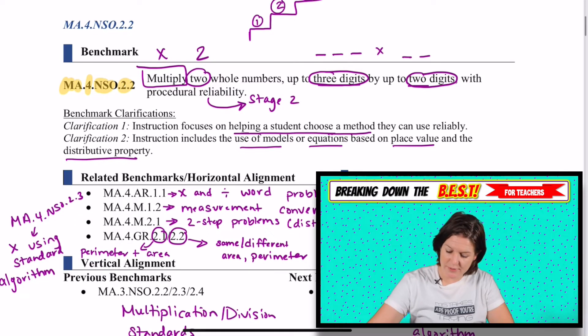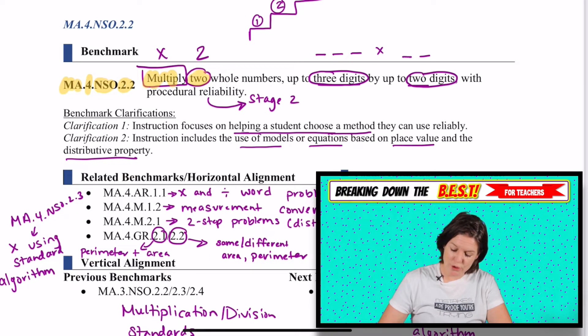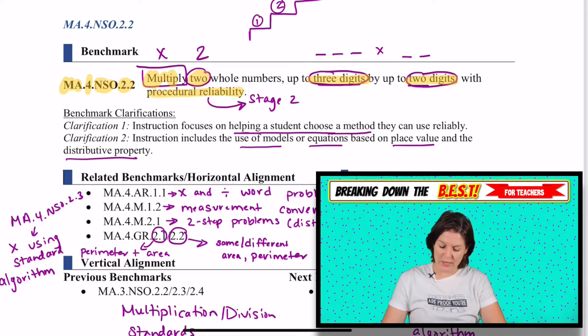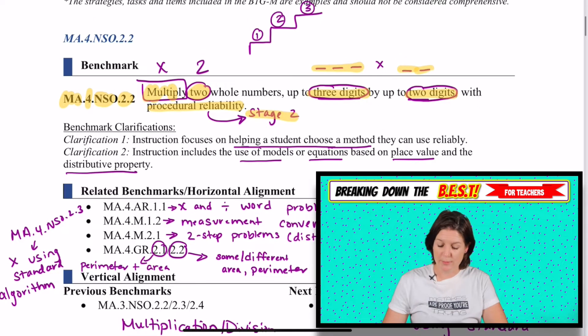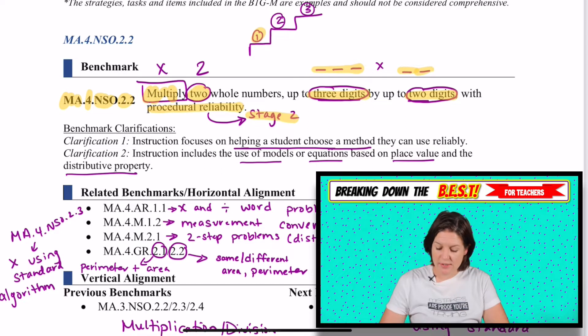Okay, so this standard says to multiply two whole numbers up to three digits by two digits with procedural reliability. Okay, so we're multiplying two whole numbers, right? No fractions, no decimals for this standard that are up to three digits. So the ones, tens, hundreds place, which means it could be one digit times two digits. It could be one digit times three digits. It could be three digits times two digits or two digits times three digits. Either way, it's using procedural reliability, which I label as stage two or step two. This is not an exploration standard. We're moving into strategies that will help us get to procedural fluency, which is coming soon with a standard algorithm.